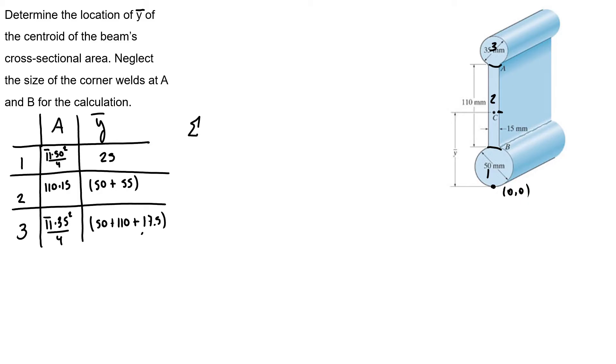Now we can use sum of areas times y-bar. So sum of A times y-bar equals A1 times y-bar 1 plus A2 times y-bar 2 plus A3 times y-bar 3. So y-bar will be π times 50 squared over 4 times 25, plus 110 times 15 times 105, plus π times 35 squared over 4 times 177.5, divided by my total area.